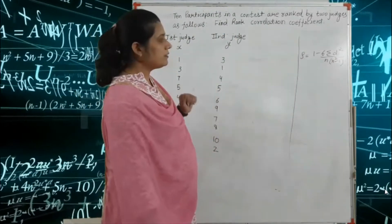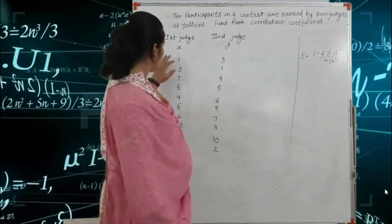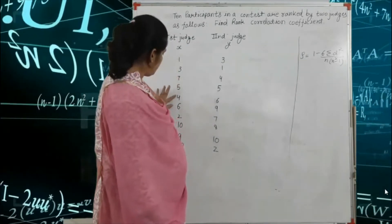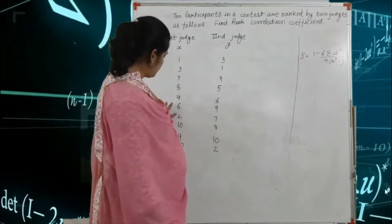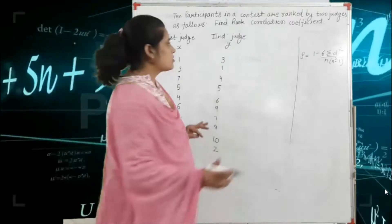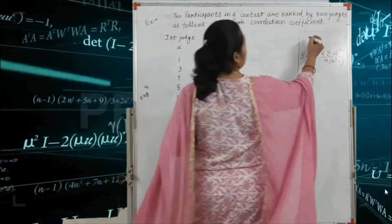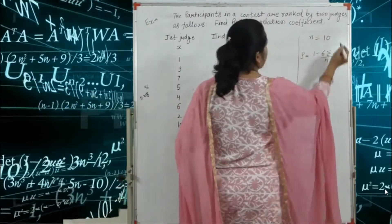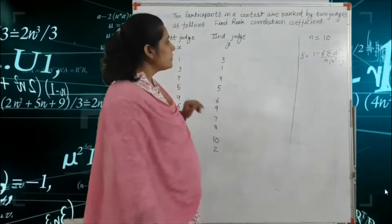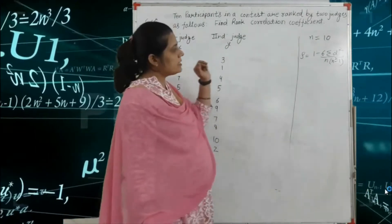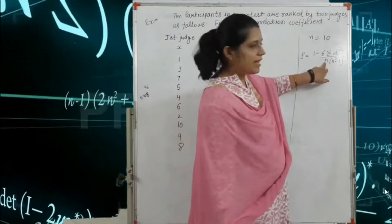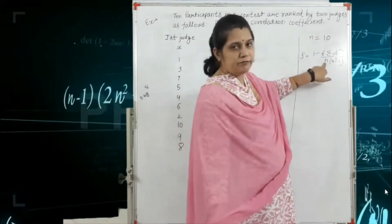Here n is equal to 10 — the number of terms. So n = 10. Next we need to find the value of summation d², but before finding d² we first find d.